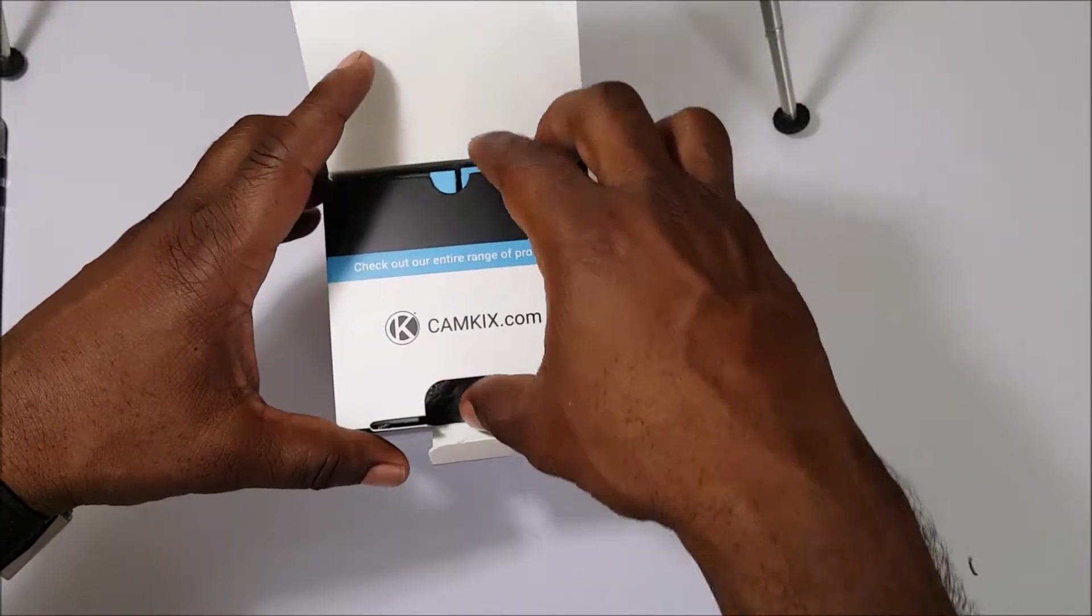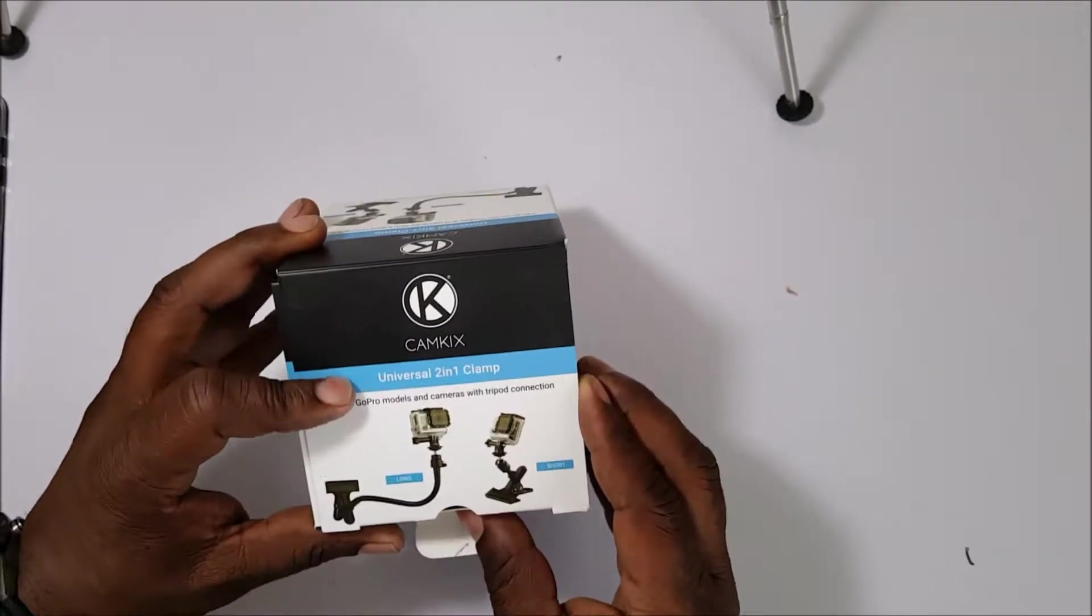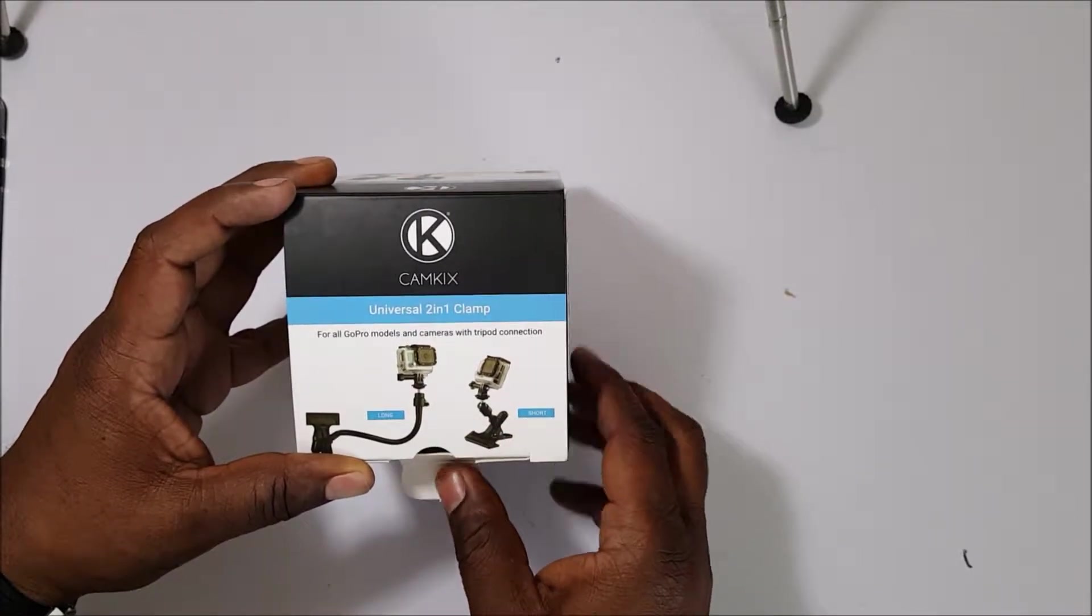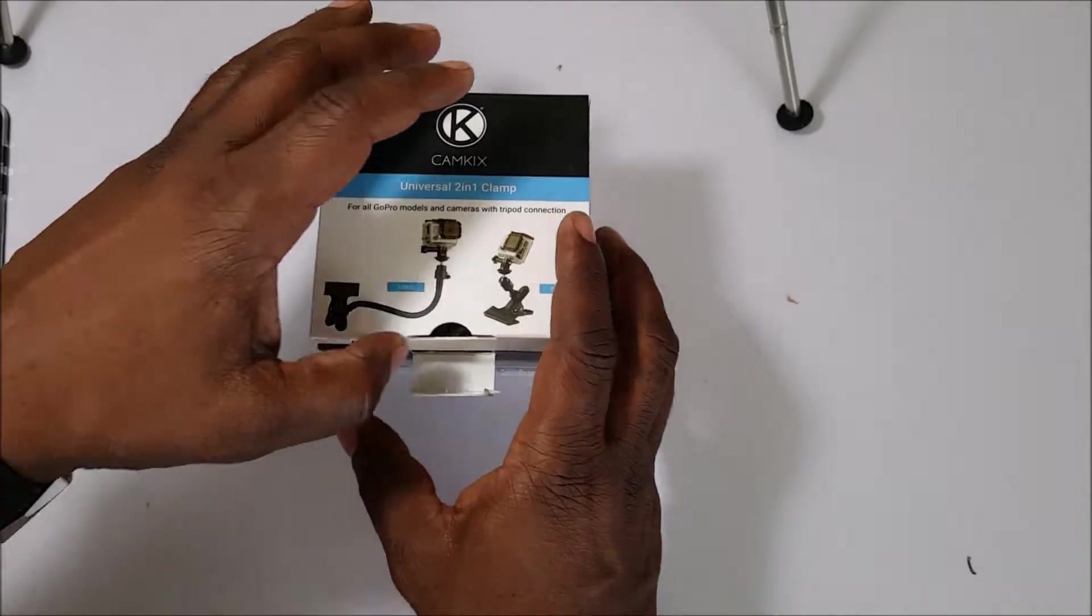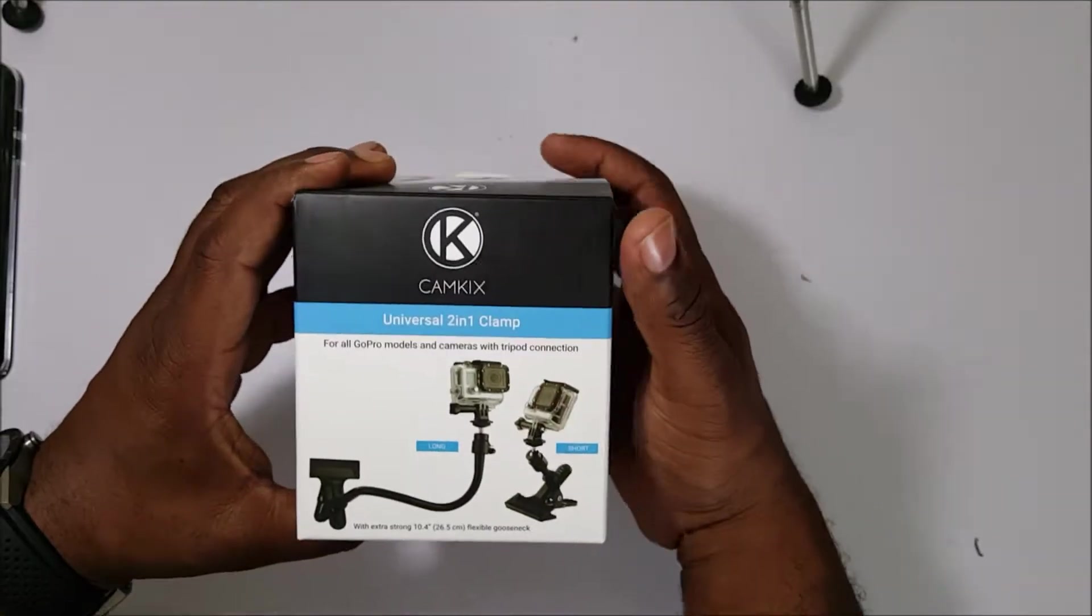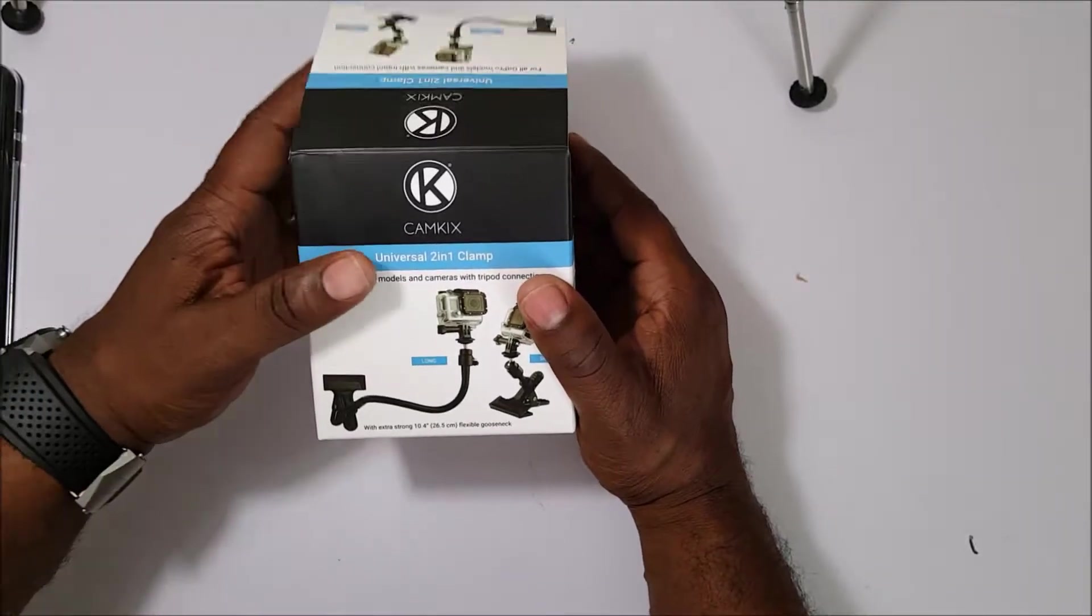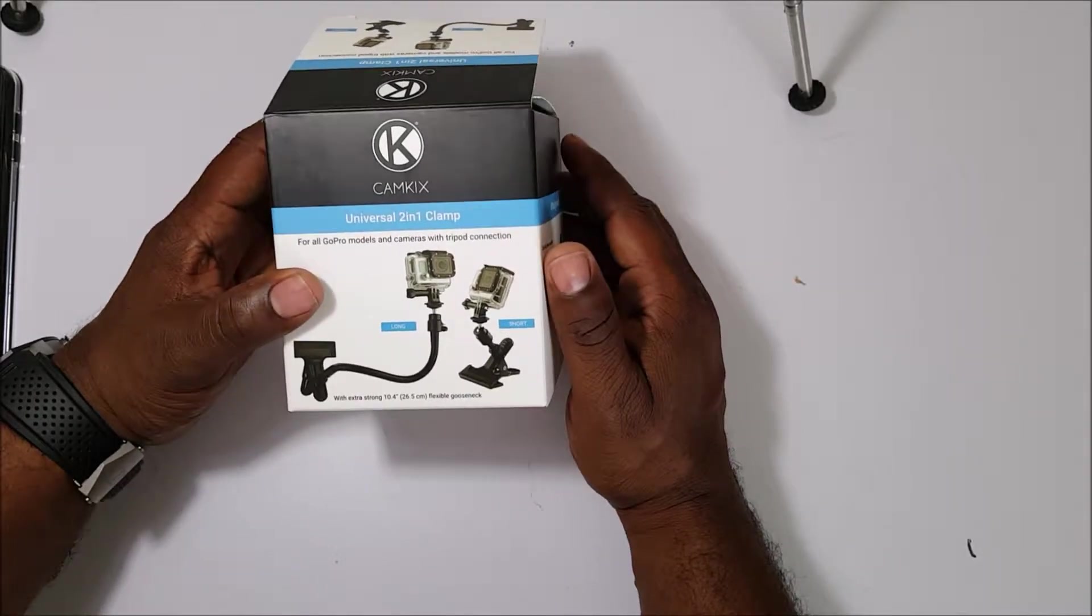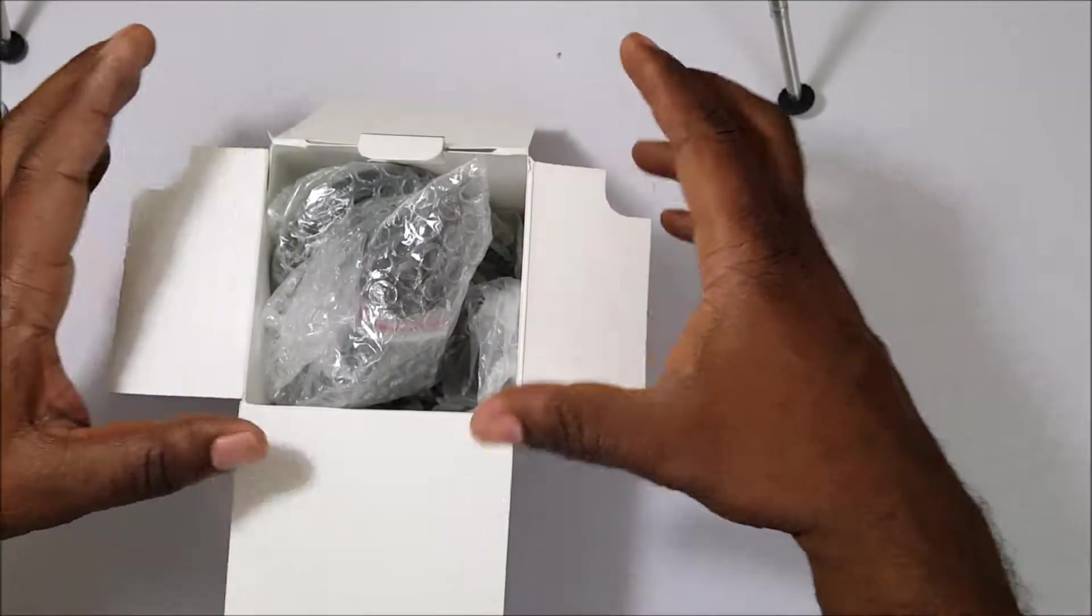All right, here we go. Cam Kit Universal 2-in-1 clamp. Now this is actually made for a GoPro, but we're going to use it to work with the mic. So let's open it up. Well, let's see what the box says. I'm always in such a rush to hurry up and open up. Let's look at what the box says. Actually, see if I can talk. For all GoPro models and cameras with tripod connections. So really all you need is something with a tripod connection. I ordered an adapter so we have an adapter that we're going to be able to use this with, and it will screw right into the mic because the VideoMicro has a specialty socket that doesn't work with traditional tripod mounts.